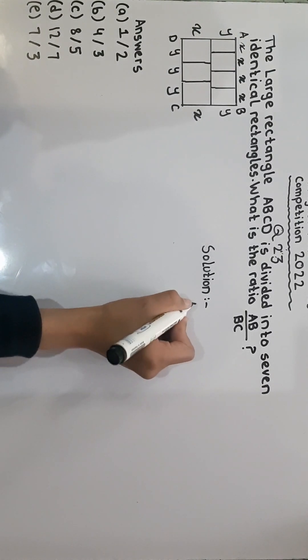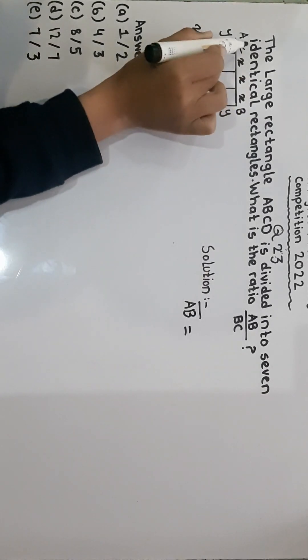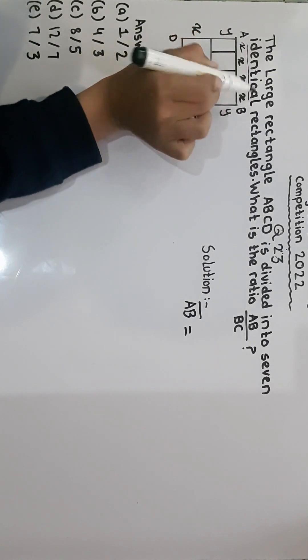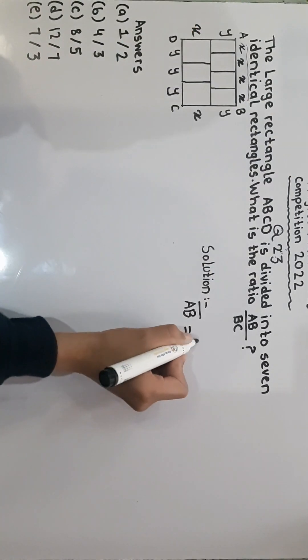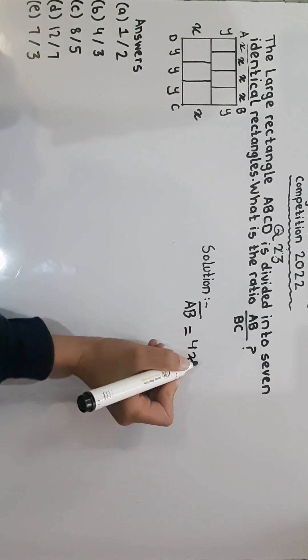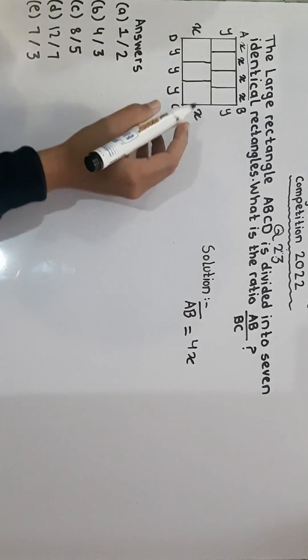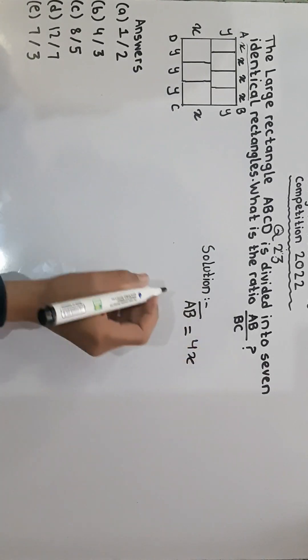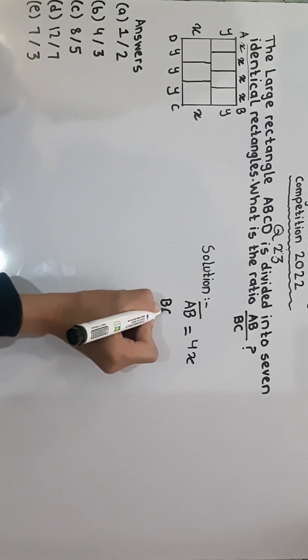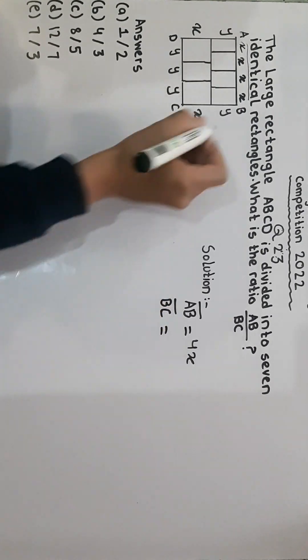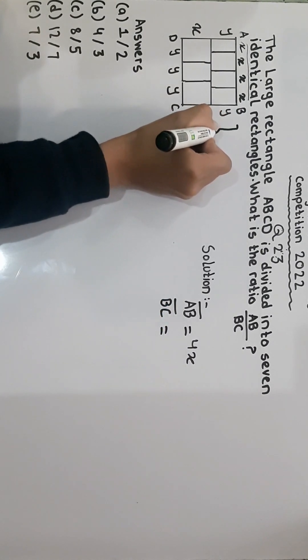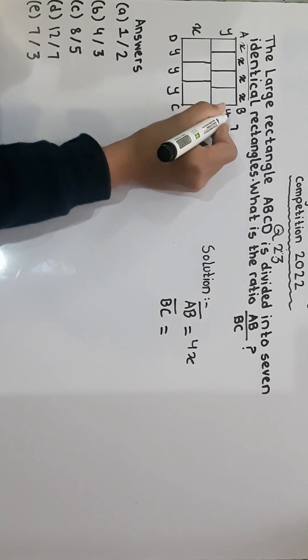First, we have to find AB. AB is equal to this, this means 4X. AB is equal to 4X divided by BC. And BC is equal to this. This is BC and this is equal to Y plus X.